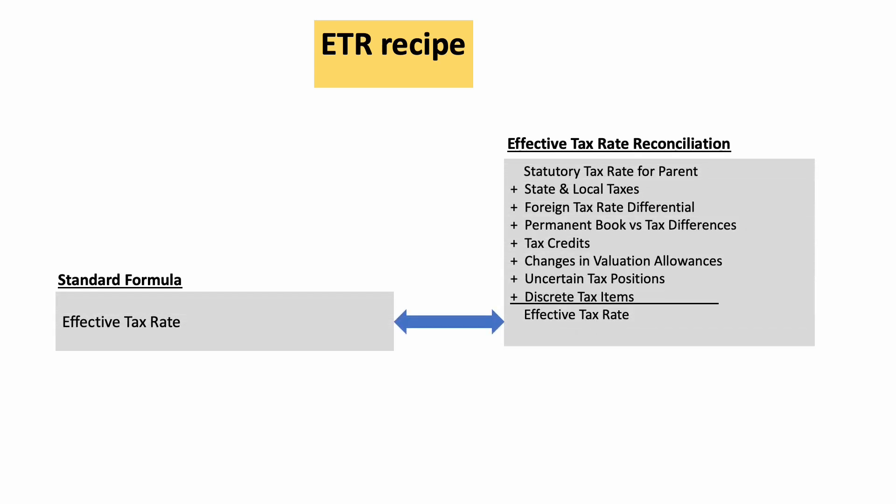Moving on to the recipe for ETR — what exactly needs to be done to calculate it and what's the key formula? The ETR is your total tax expense divided by your total income as per your US GAAP financials. That is a simple way of explaining how to calculate ETR. You calculate it by dividing your total tax expense by your total income as per US GAAP financials.